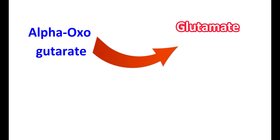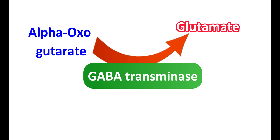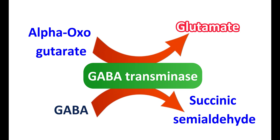Glutamate can be synthesized in the brain from two sources. It can be obtained from alpha-oxoglutarate, also called alpha-ketoglutarate, which is an intermediate obtained from glucose via the Krebs cycle. This conversion of alpha-ketoglutarate to glutamate is mediated by the enzyme GABA transaminase. Interestingly, the same enzyme is also responsible for the conversion of GABA into succinic semialdehyde.